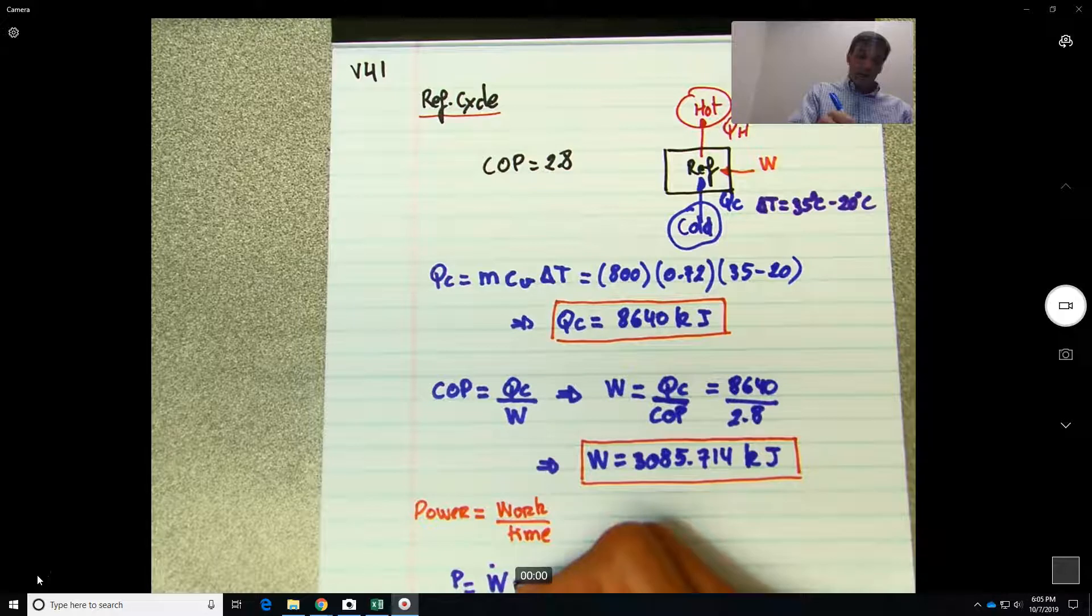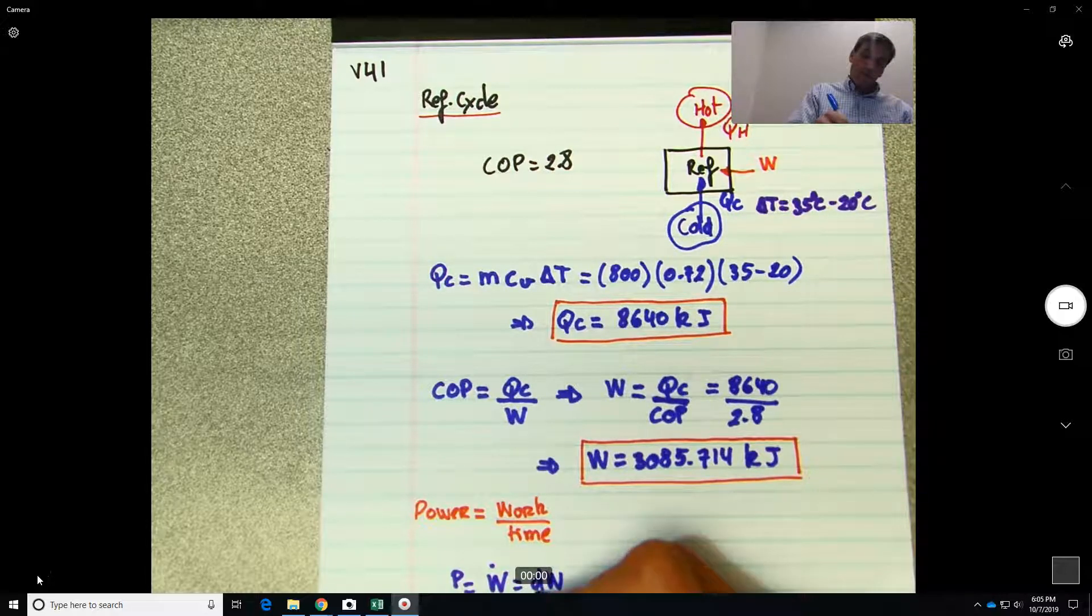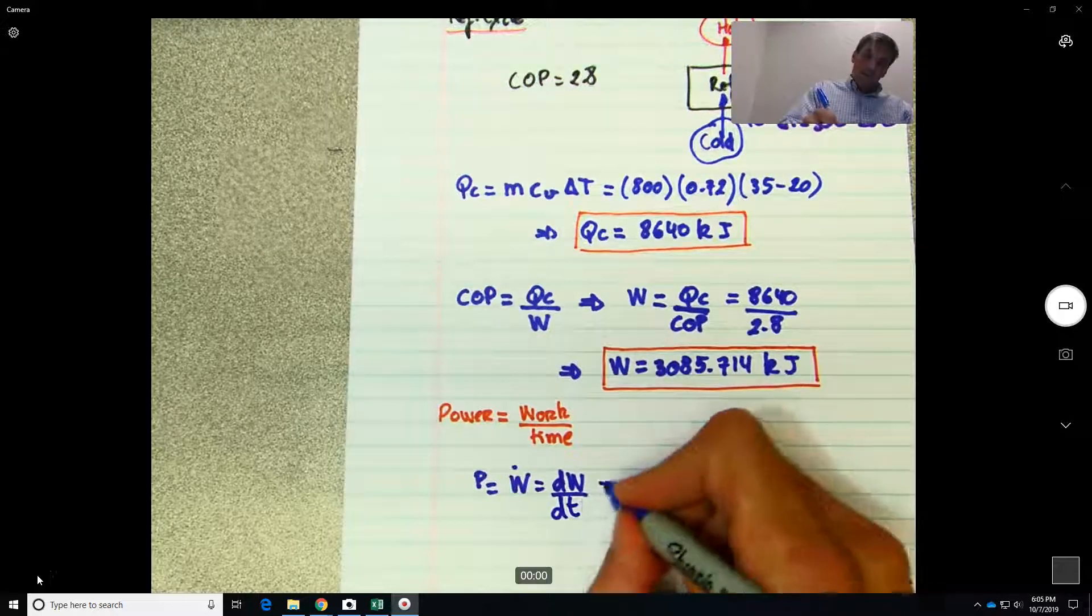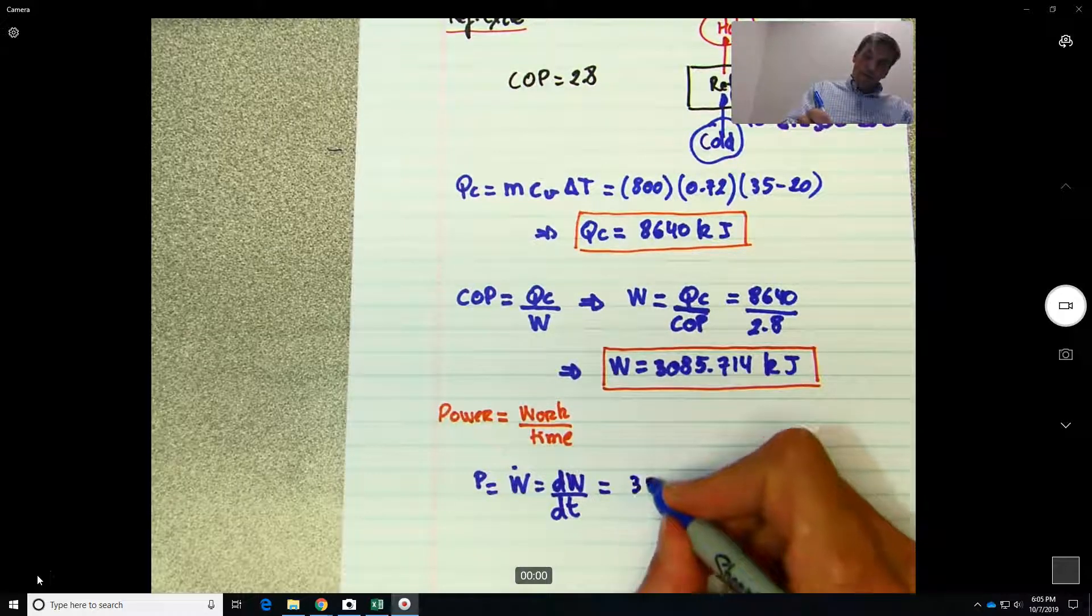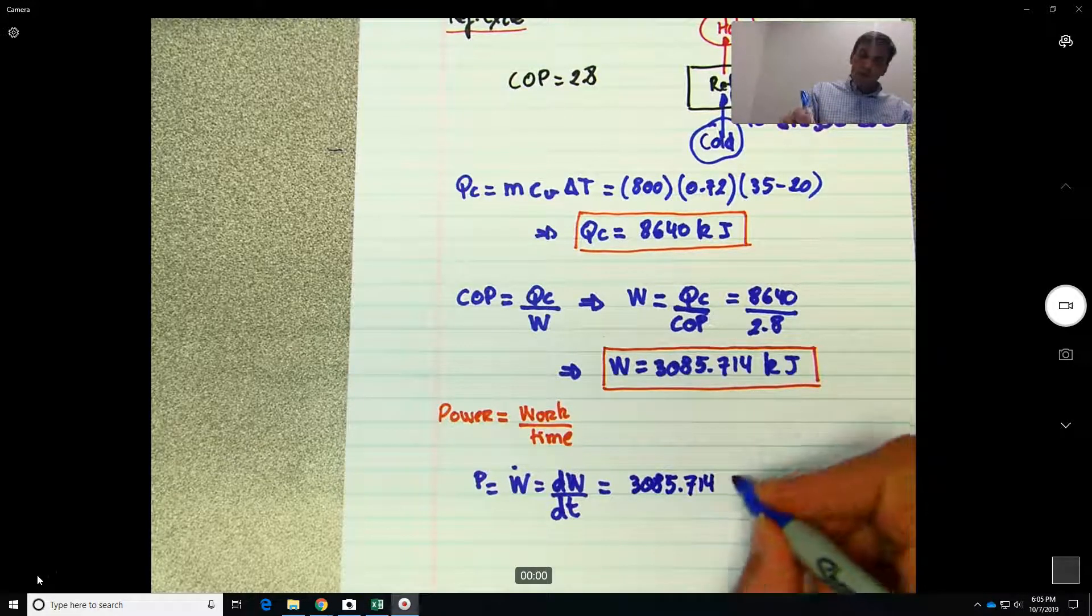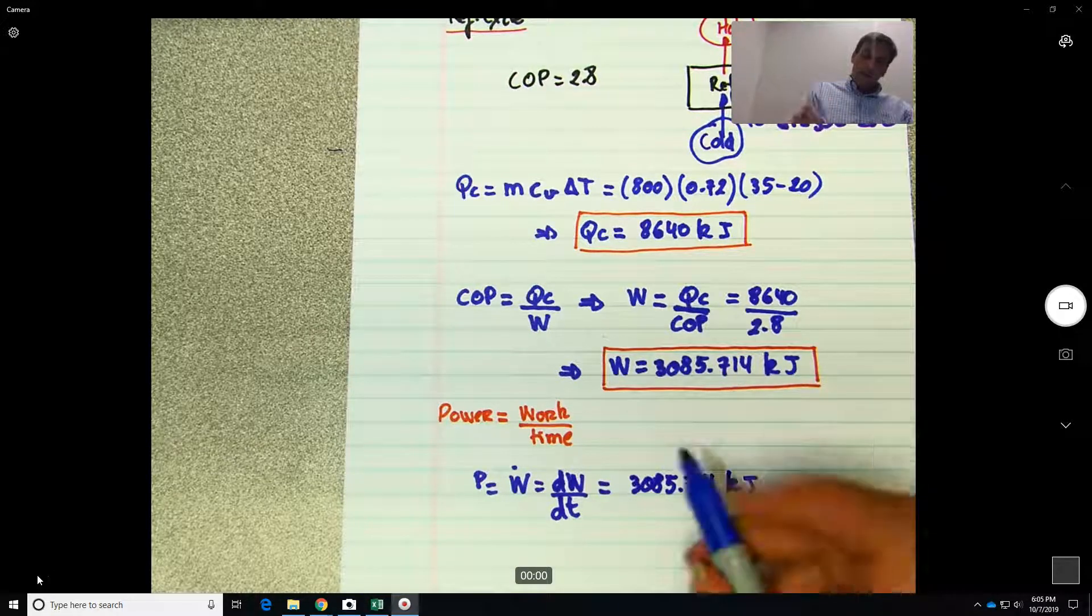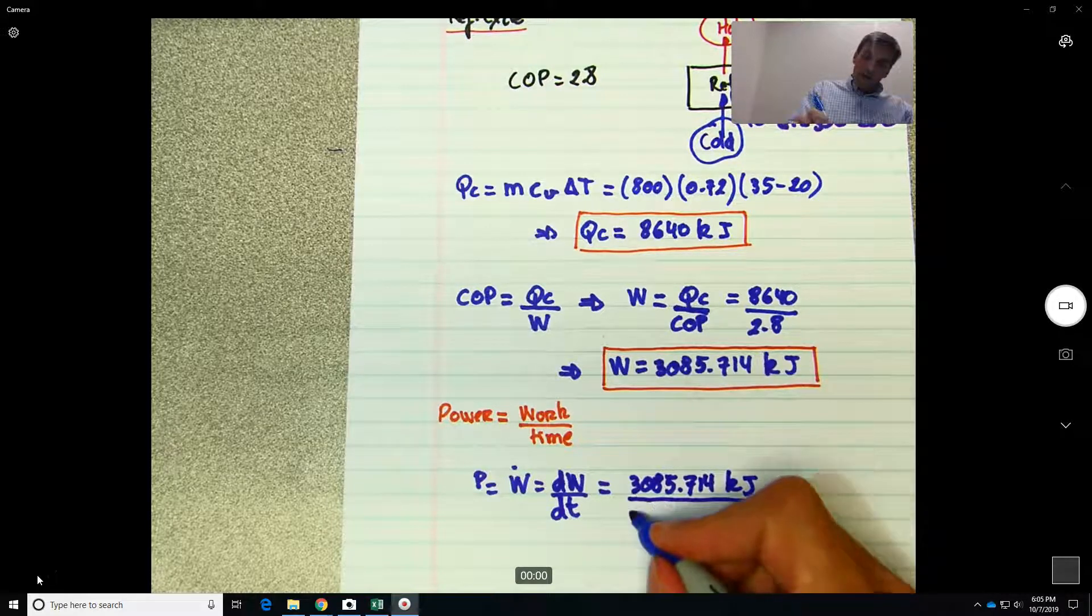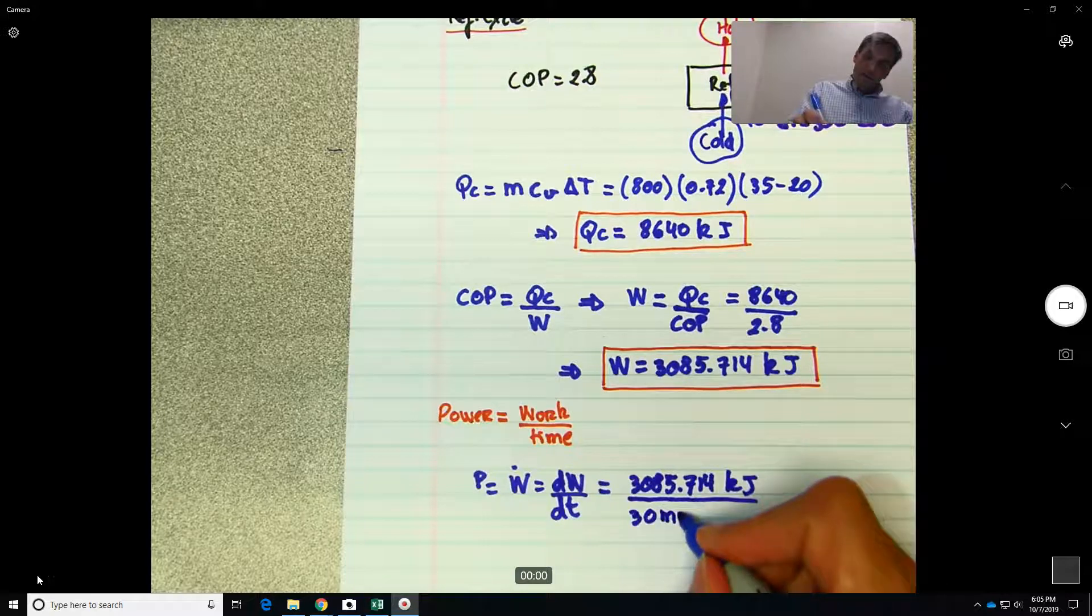Would be equal to 3085.714 kilojoules divided by 30 minutes. And then we know that one minute is equal to 60 seconds.